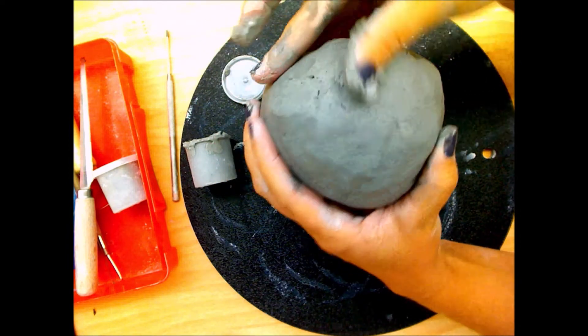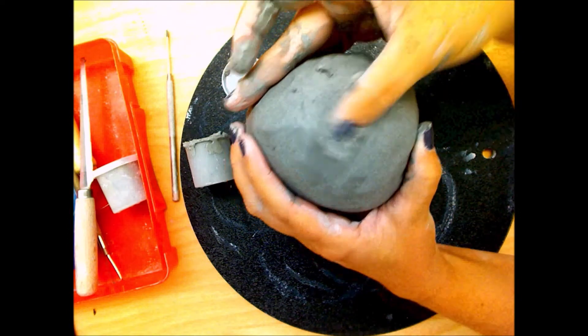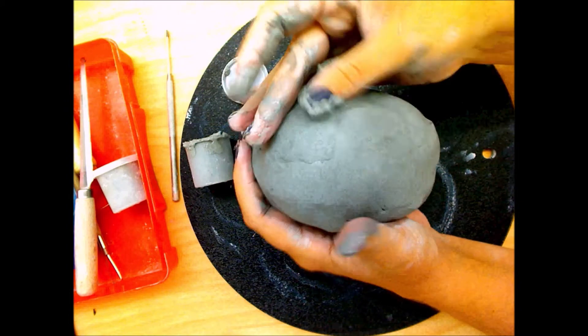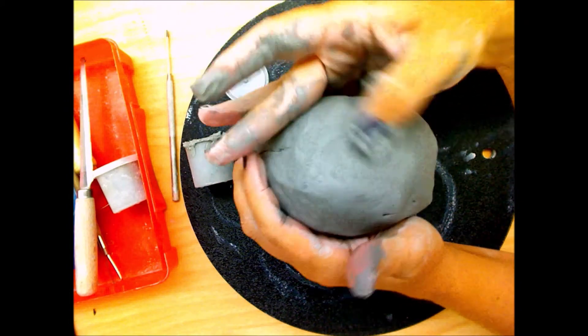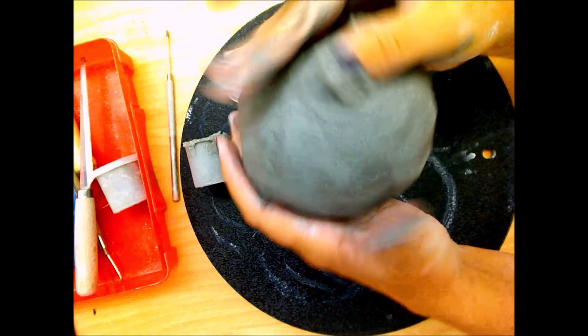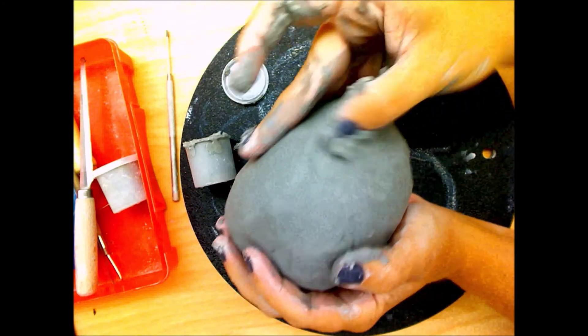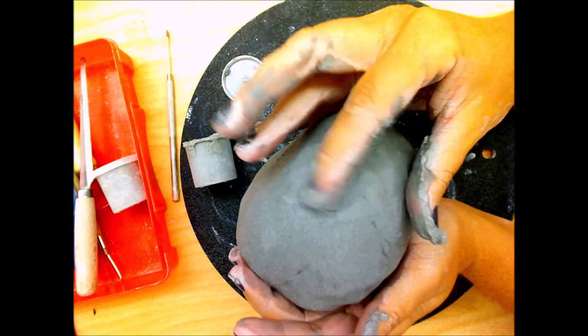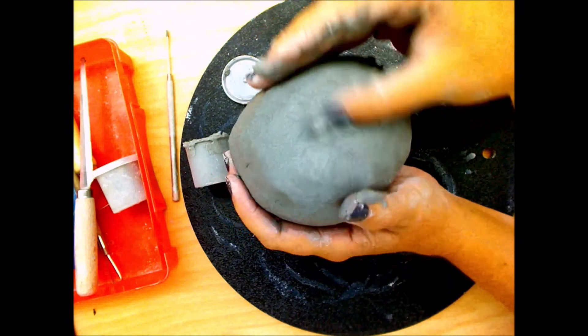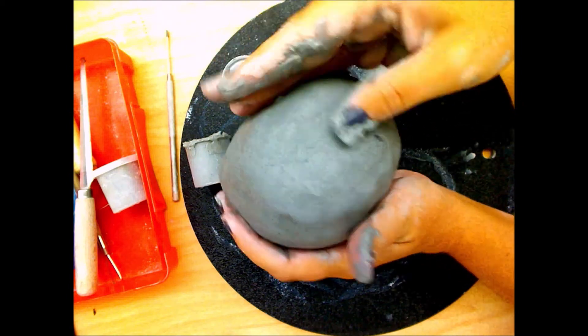Once you get the seam sealed up the air inside becomes trapped and you can put a little bit more pressure on it and kind of rotate it in other directions. If you do this you can get rid of some unwanted bumps or lumps in your sphere and really shape the body the way that you would like it to be.